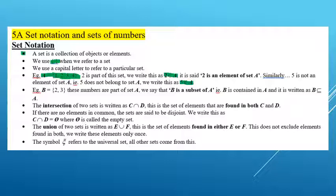If set B has the elements 2 and 3, and these numbers are also part of set A — because 2 and 3 belong in both set B and set A — we can say B is a subset of A. That is, B is inside A, B is contained in A, and we write this using the subset symbol.